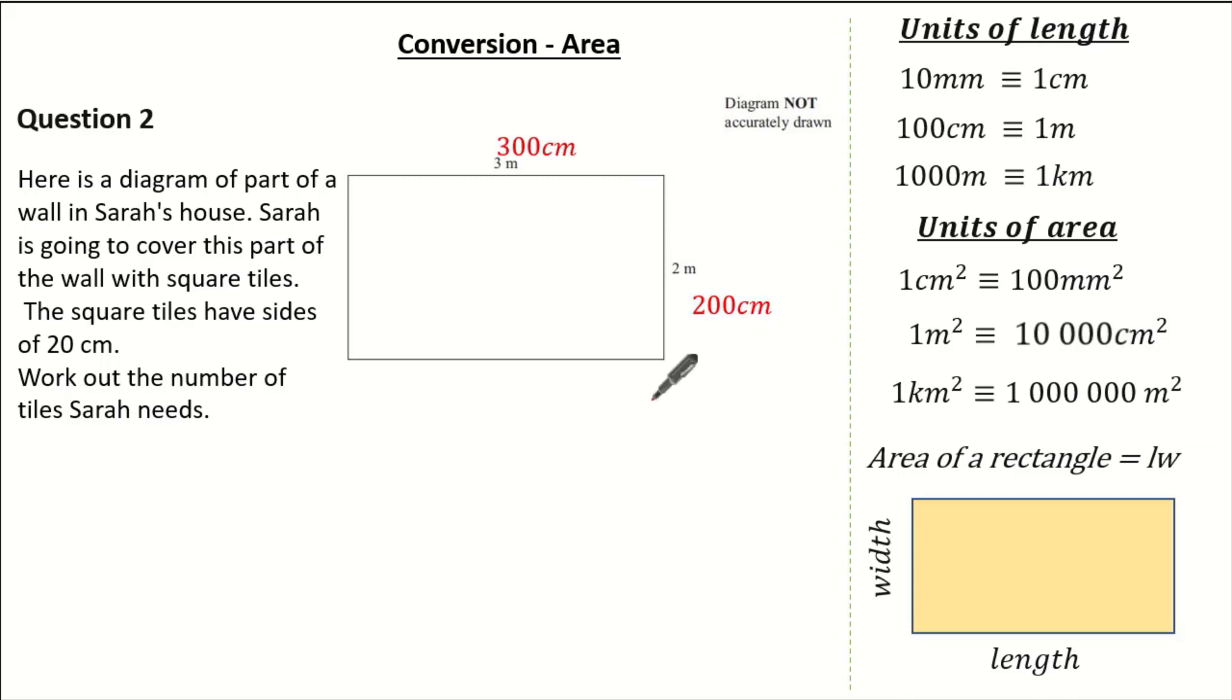So if we know one square tile has a length of 20cm, how many square tiles can we have going along our 300cm? Well, 300 divided by 20 means I can get 15 square tiles all along the length.